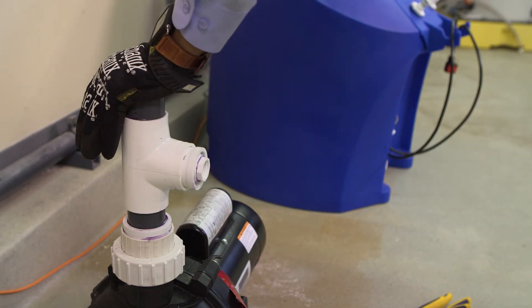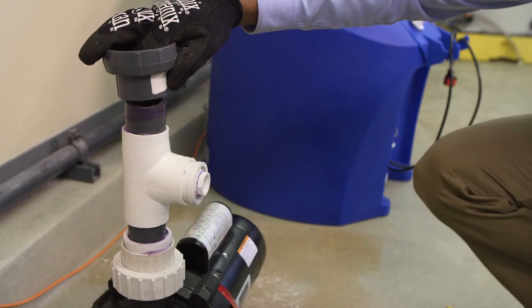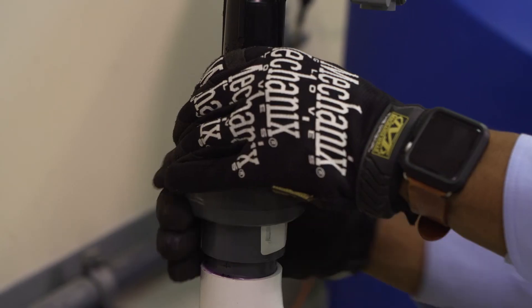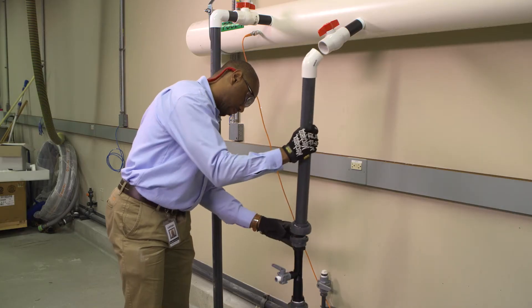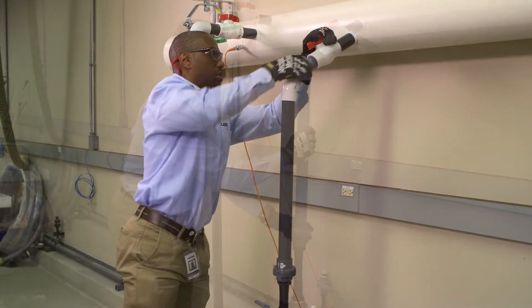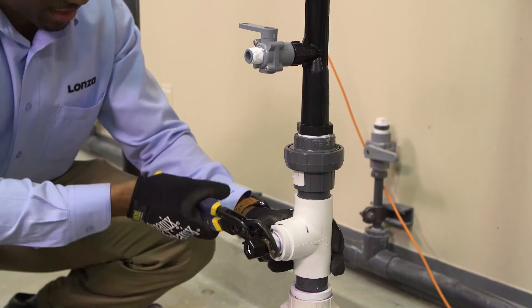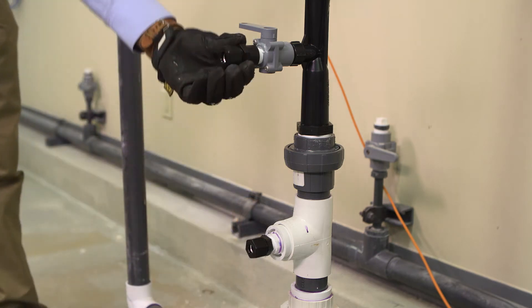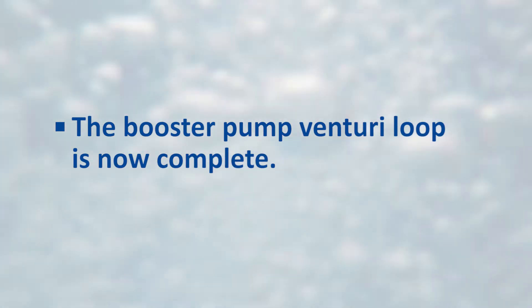Using the unions, connect the inlet side of the Venturi to the reducing T coming off the pump discharge and the outlet side of the Venturi to the 1.5-inch ball valve connected to the pool recirculation line. Use additional 1.5-inch PVC piping as necessary to complete the connection. Install the female Parker fitting on the ball valve at the Venturi suction. The booster pump Venturi loop is now complete.